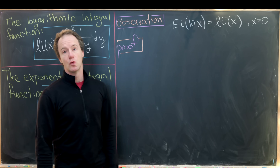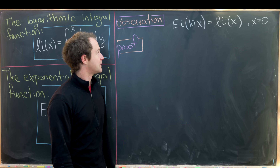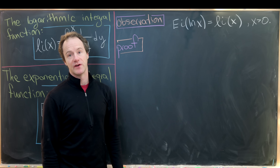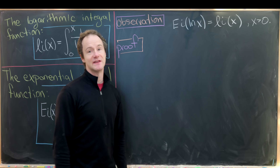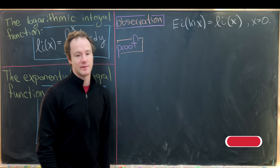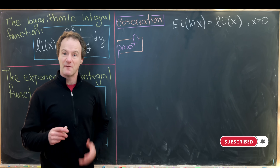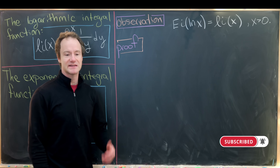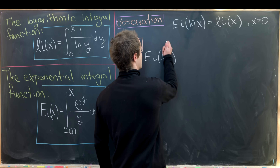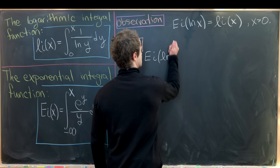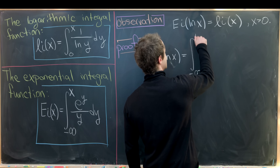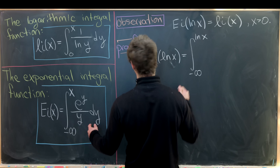The first observation links these two functions together: Ei evaluated at the natural log of x gives us the logarithmic integral function Li(x). This goes quickly via a quick substitution. Let's calculate Ei(ln x), which equals the integral from minus infinity up to the natural log of x of e^y over y dy.